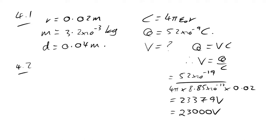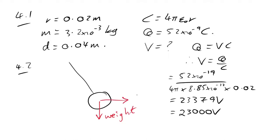Question 4.2: draw labelled arrows showing forces on sphere B. We have weight pulling down, electrostatic repulsion directly sideways. Since it's in equilibrium, we need three forces adding to zero — the third is the tension in the wire keeping it there, balancing the other two.